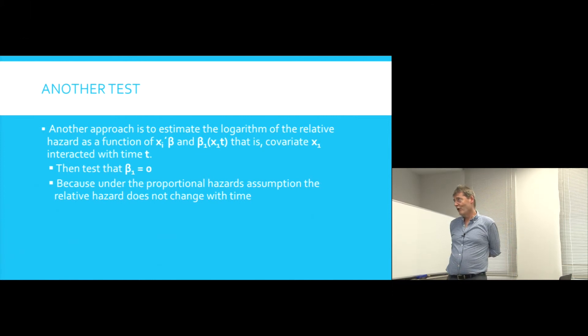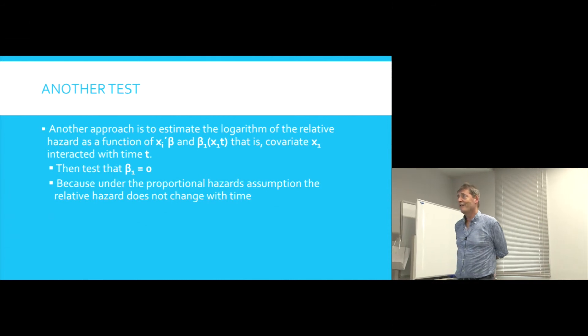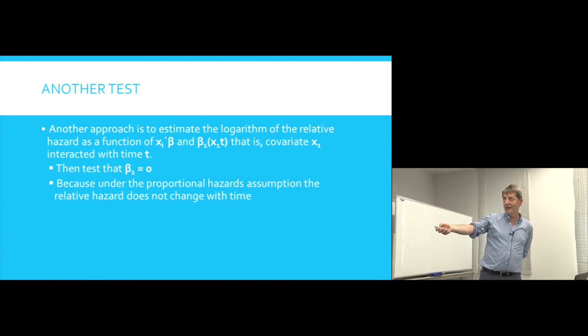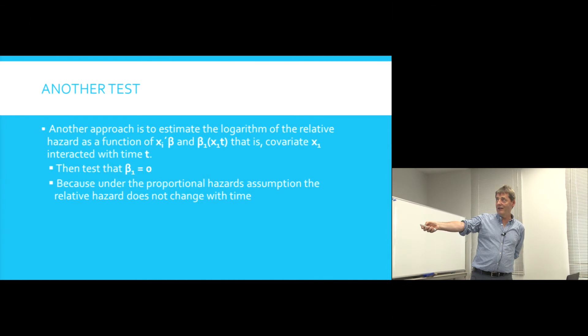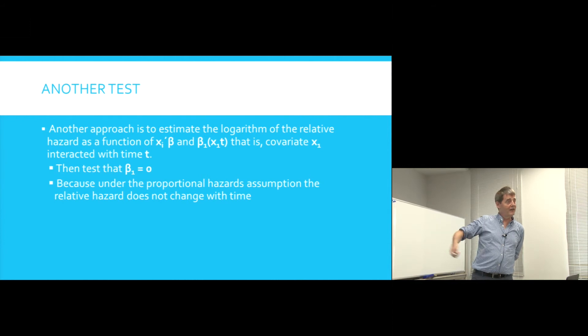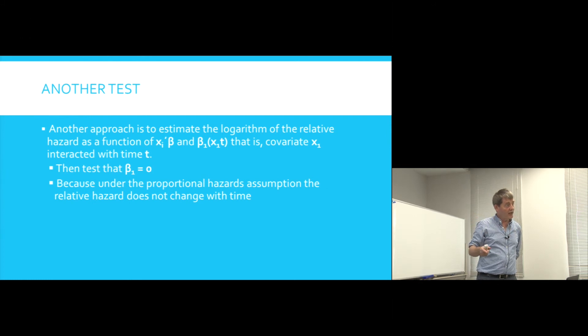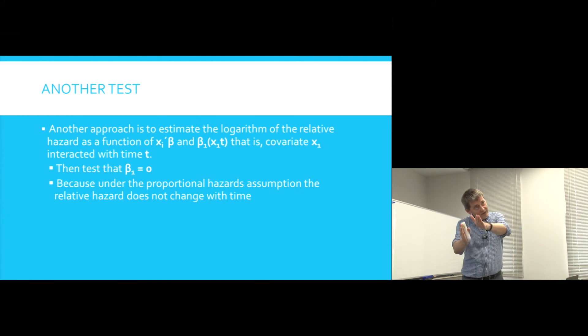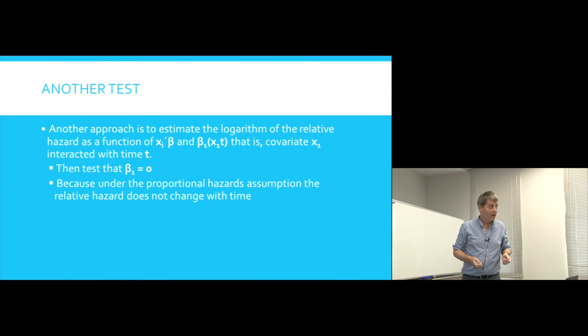You estimate the logarithm of the relative hazard as a function of these two things. Now, this is the covariate interacted with time. And this coefficient should be equal to zero, because the assumption is the hazard ratio is not changing over time. As time moves forward, the hazards are moving together. And so there's no effect of the hazard ratio or time on the hazard ratio. And so this should be equal to zero.